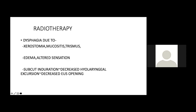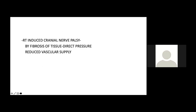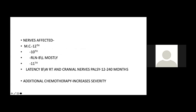Post-radiotherapy dysphagia may occur due to xerostomia, mucositis, trismus, edema, altered sensation, and subcutaneous induration — which decreases laryngeal excursion and upper esophageal opening. RT-induced cranial nerve palsy can occur from fibrosis or reduced vascular supply, most commonly affecting the 12th nerve; the 10th and 11th nerves may also be affected, causing aspiration or dysphagia. When radiotherapy is combined with chemotherapy, severity increases significantly.